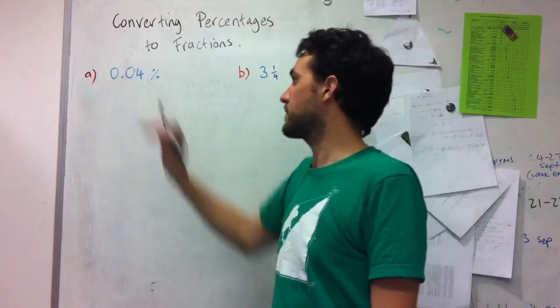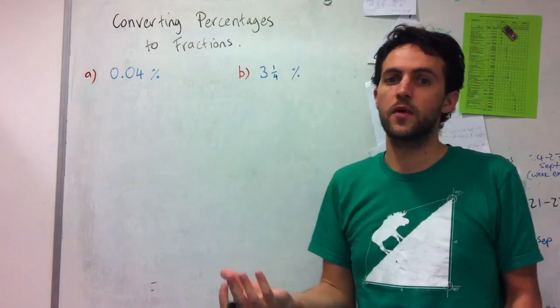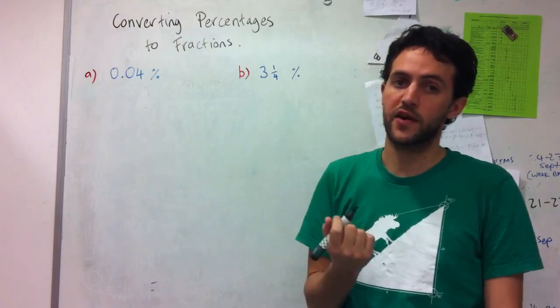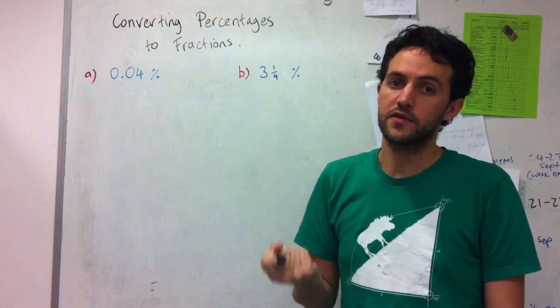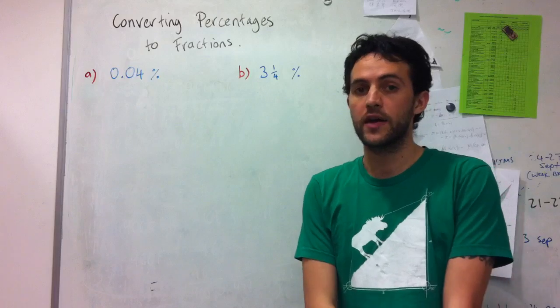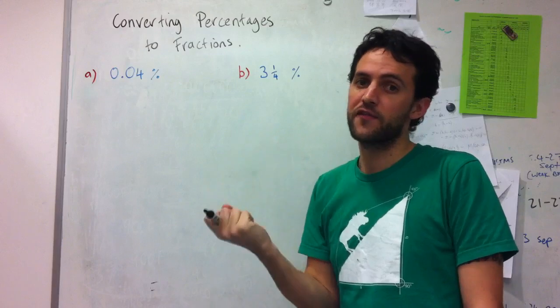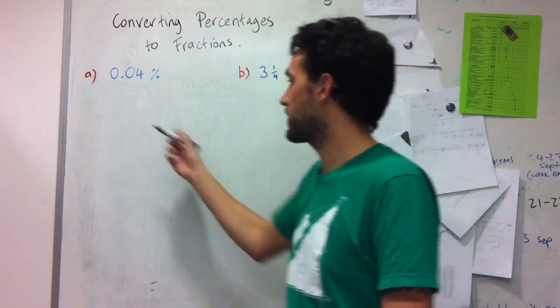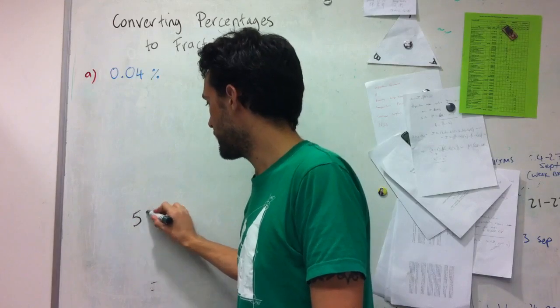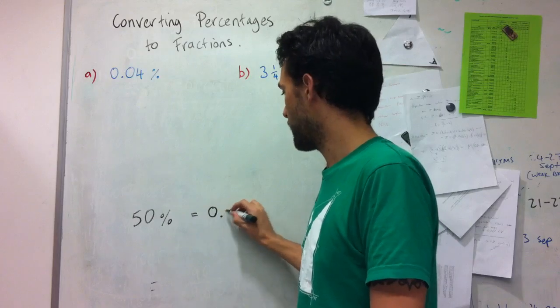So first I'll do 0.04 percent. One of the things I think is a good idea to do, since essentially when we're converting between percentages and decimals, between percentages and fractions, we're either multiplying or dividing by a hundred, the important thing is just to remember which way we're going. So sometimes what I like to do is have a sort of reference equation, something that I know really well. So for both of these what I'm going to keep in mind at all times is that I know that fifty percent is a half and that that's equal to zero point five.